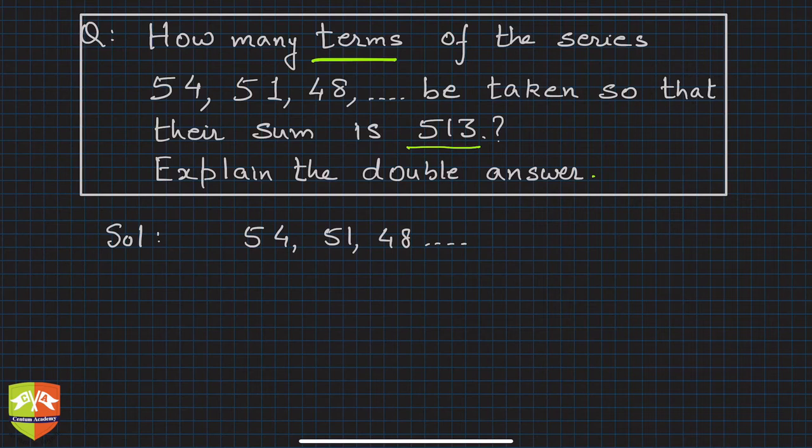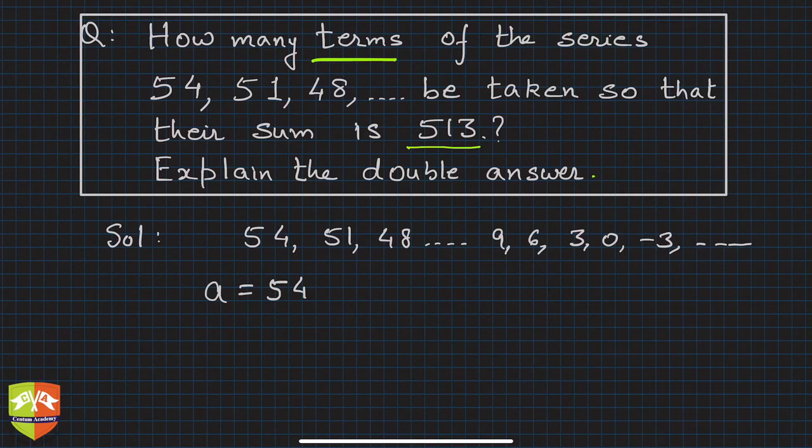Going forward it will be 9, 6, 3, 0, -3, and so on - it will keep going. This is the series. Now clearly, a is 54.